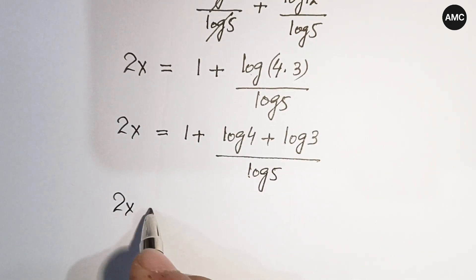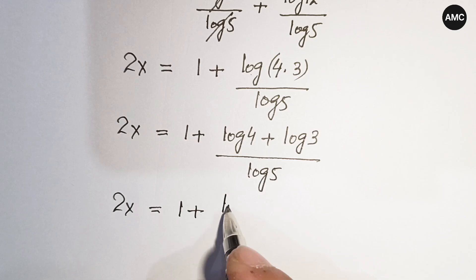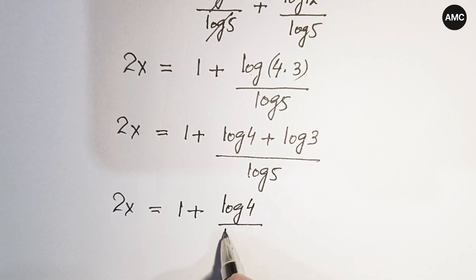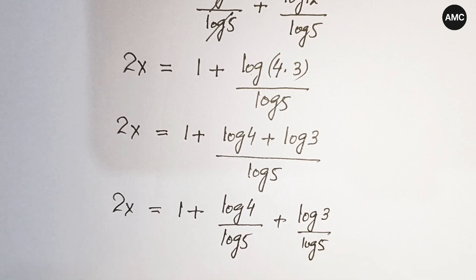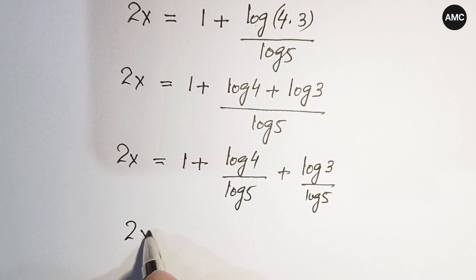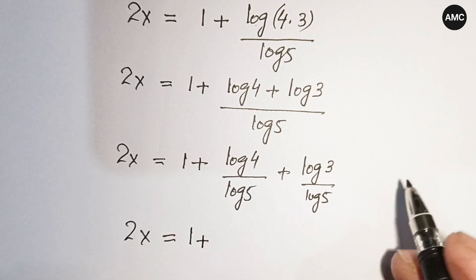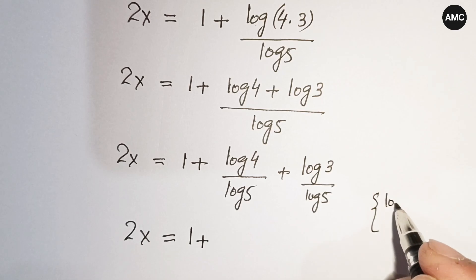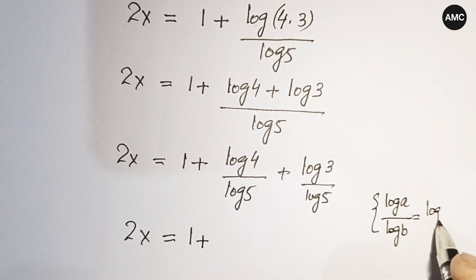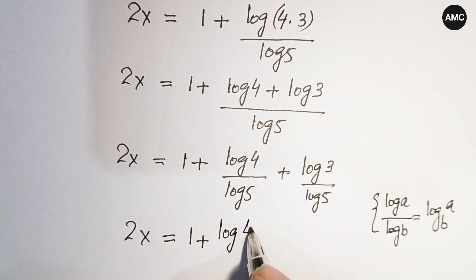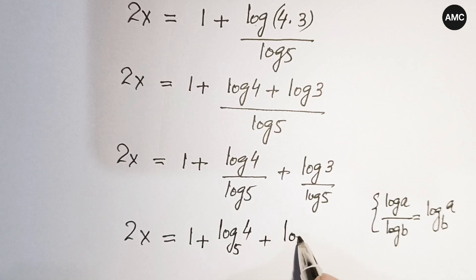Continuing, log 12 equals log 4 times 3, which expands to log 4 plus log 3. So we have 2 times x equals 1 plus log 4 over log 5 plus log 3 over log 5. Using the change-of-base rule — log a divided by log b equals log a to base b — we get 2x equals 1 plus log 4 to base 5 plus log 3 to base 5.